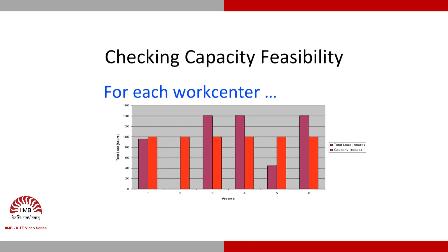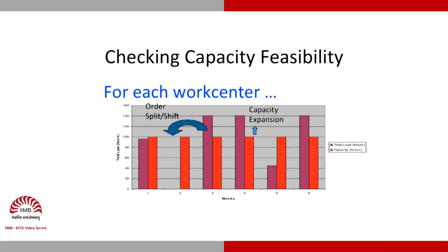To address week three's excess load, we can take that extra load and transfer it to the previous week two — this is called an order split or shift. We could transfer it to week five, but that would attract backlog costs, so we generally look at splitting and shifting to a prior period.